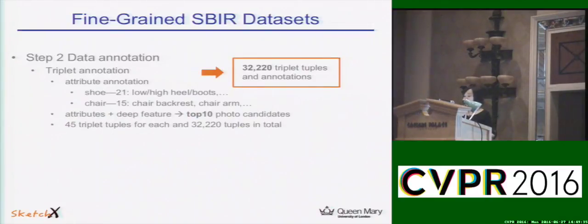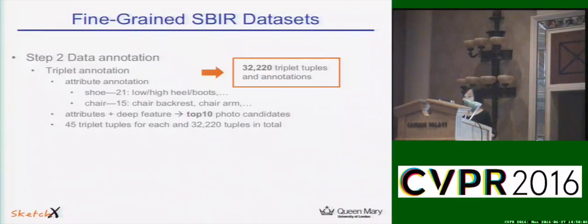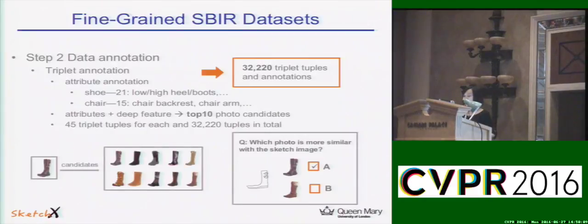In order to better capture and learn the fine-grained differences between sketch and photo, we also asked volunteers to do similarity annotation. It is hard to do an exhaustive overall ranking for each query sketch, but it becomes much easier to compare between two photos. Our idea is to select the most similar photos for each sketch and then do pairwise comparisons among them. We collected attribute annotations first to help find candidate photos, then combined attributes and deep features to select 10 candidate photos per sketch. For any two candidates, volunteers indicated which was more similar to the query sketch. After this step, we collected over 30,000 triplet tuple annotations.